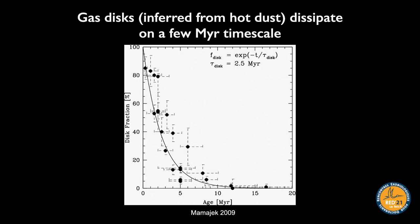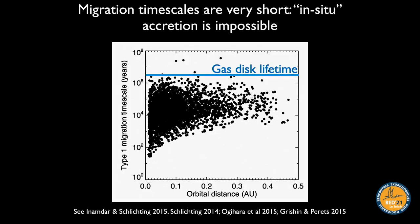This all happens in the context of gaseous disks, which as we saw last time only last a few million years. Growth happens in thousands to a hundred thousand years, while gas disks last many millions of years. That means there must be time for these growing planets to interact with the gaseous disk. This graph shows a simple migration timescale on the y-axis as a function of distance for observed super-Earth planets.